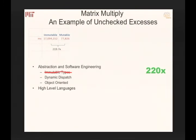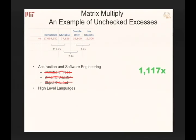I was using dynamic dispatch because I wanted different matrix types with integers and floats, but most matrices are doubles — so eliminating dynamic dispatch gave another 522x improvement. Getting rid of objects gave another 2x. At this point I had stripped away everything I was teaching in the class. Moving to C from Java gave only a 2.1x improvement — Java's JIT compiler is quite good. Python or PHP would be thousands of times slower.